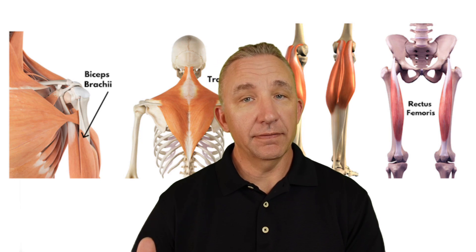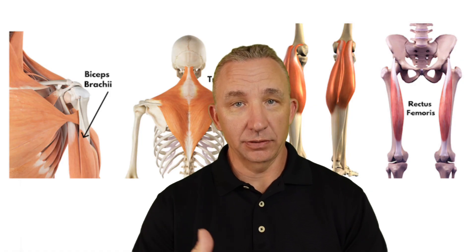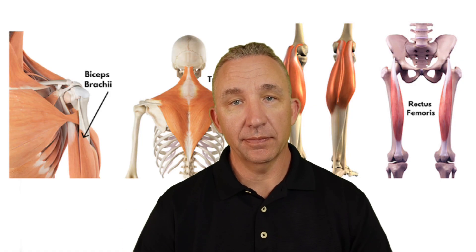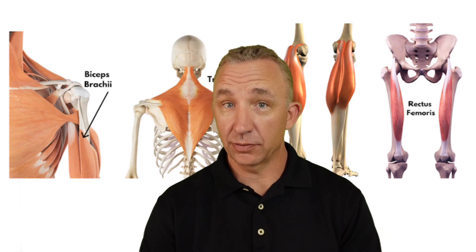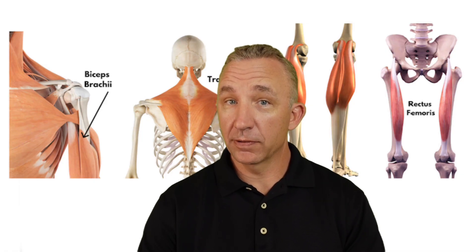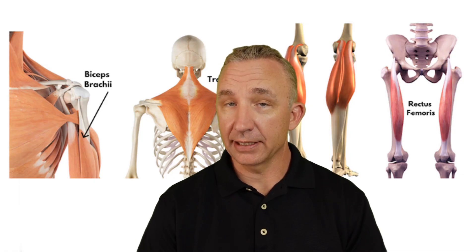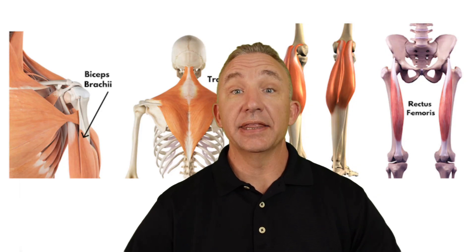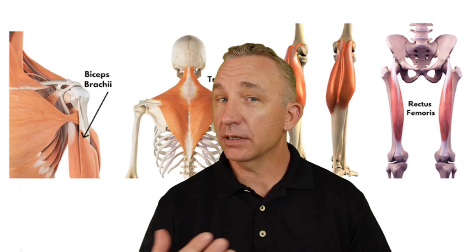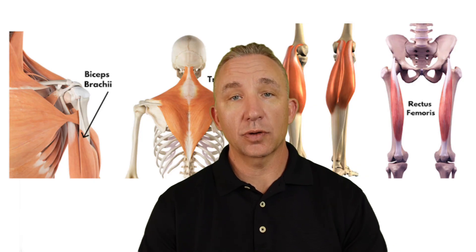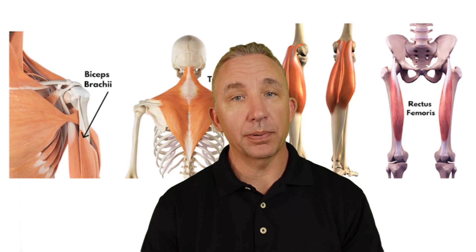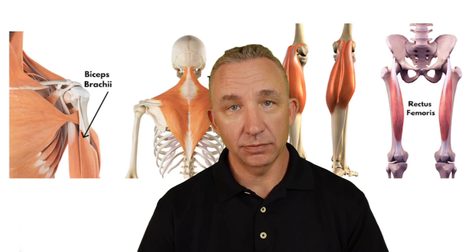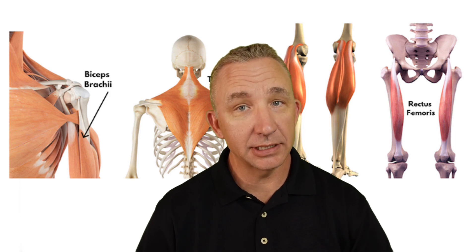When we cover the actions, the actions are results of the attachment points — the action is what type of movement the muscle does. We can organize actions into three types: the prime mover or agonist, the antagonist which does the opposite movement, and the synergists which are helpers of the agonist. We're describing the agonist, or the prime movement the muscle does, relative to how the body is positioned based on its attachments.